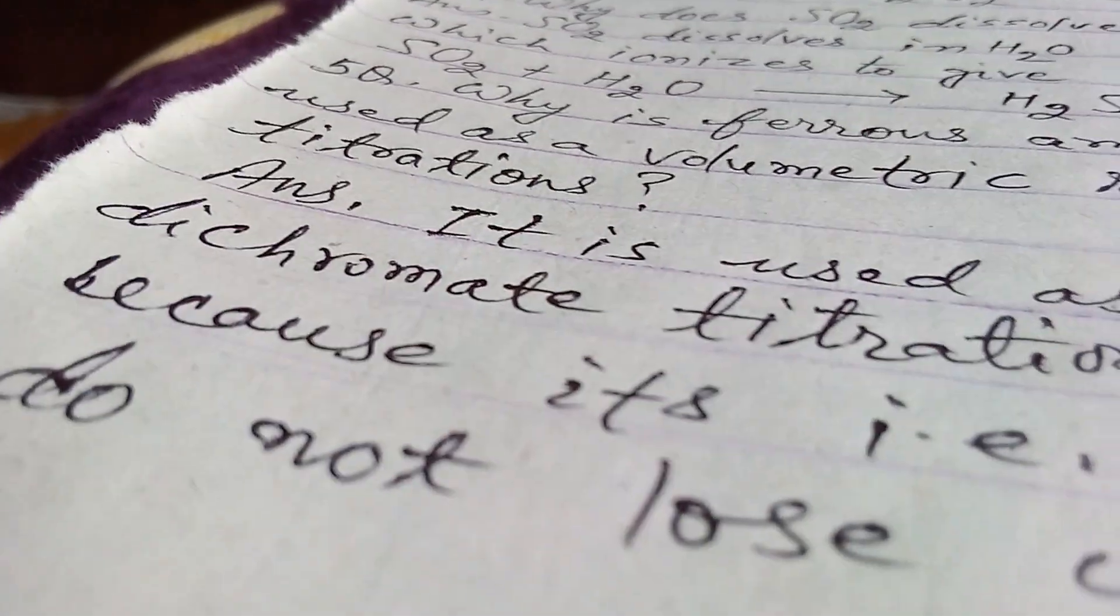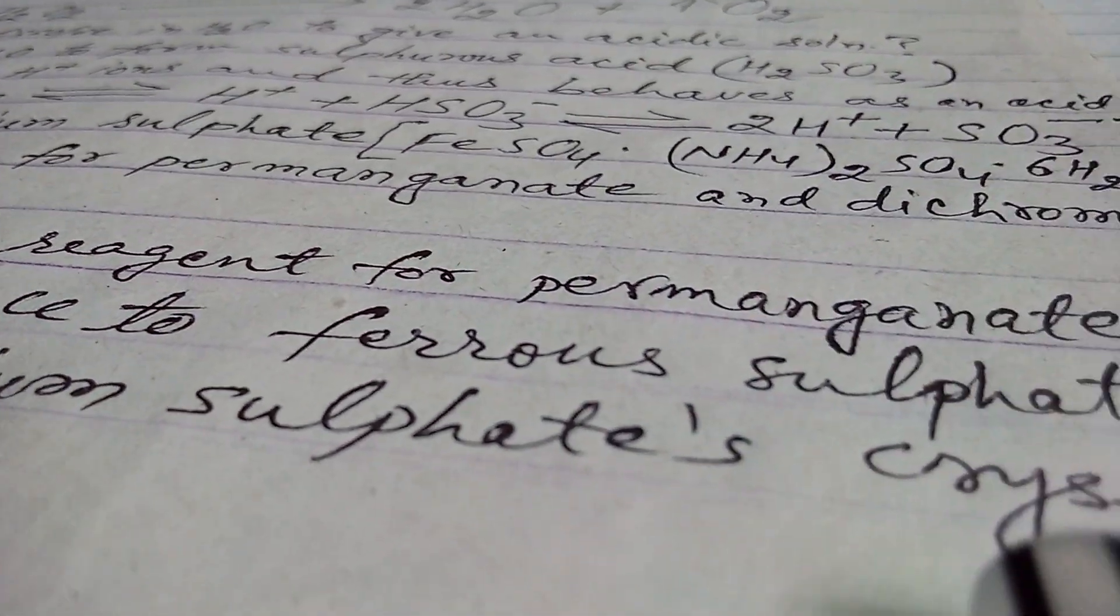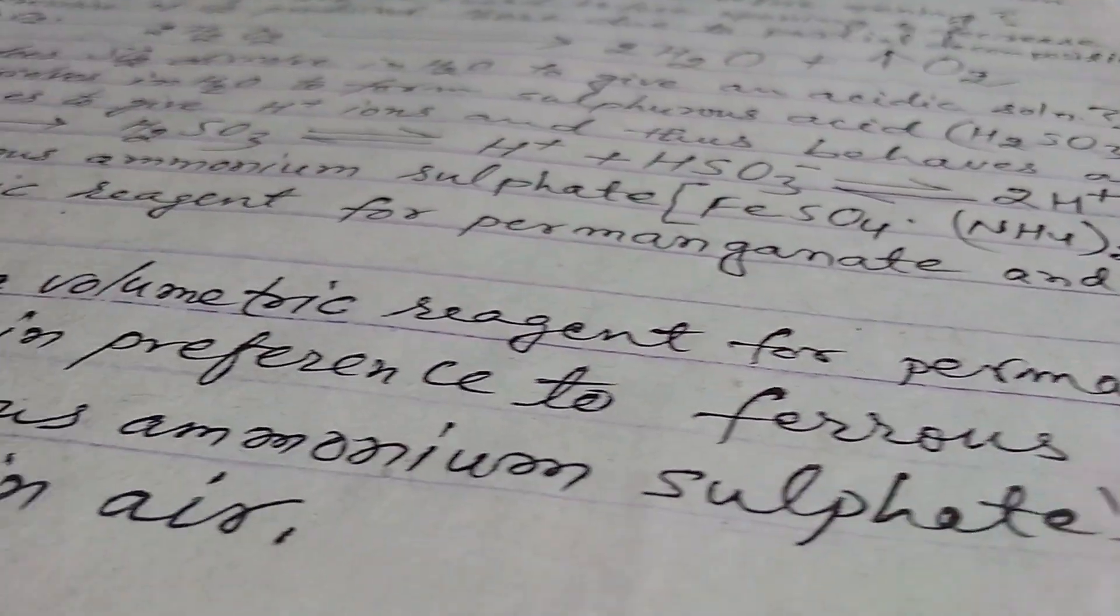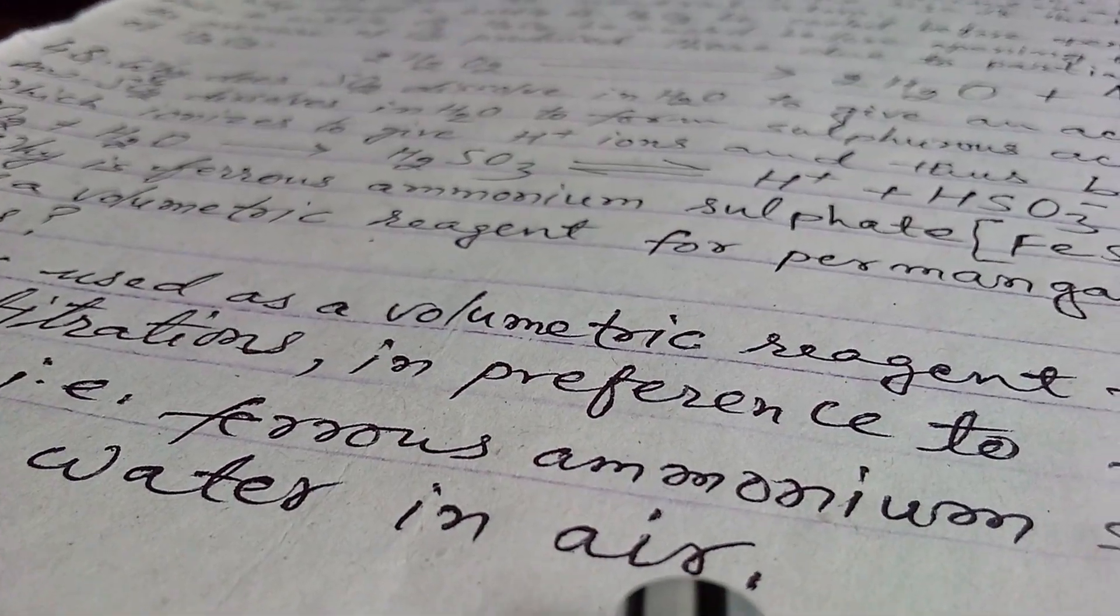Answer is: it is used as a volumetric reagent for permanganate and dichromate titrations in reference to ferrous sulfate because ferrous ammonium sulfate crystals do not lose water in air. And that's why we prefer this.